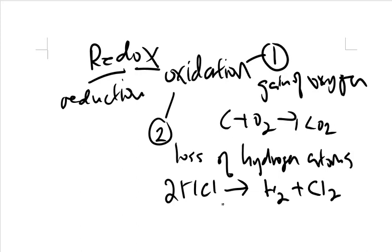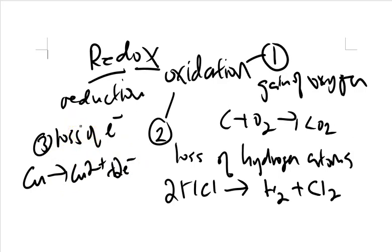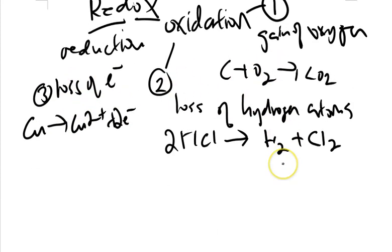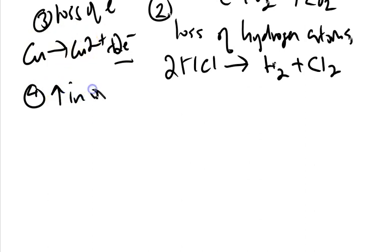The third definition is the loss of electrons. A simple example would be Cu becoming Cu²⁺ plus 2e⁻. The copper has lost two electrons to form the copper 2+ ion. As a result of this loss of electrons, something else follows — the fourth definition of oxidation: the increase in oxidation state.